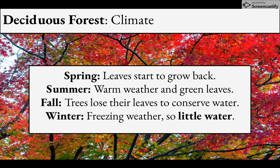The trees lose their leaves in order to conserve water. Why do they need to conserve water? Because in winter you get a lot of freezing weather, and when water freezes it gets much harder to obtain. So the trees lose their leaves to conserve water before it freezes during the winter.